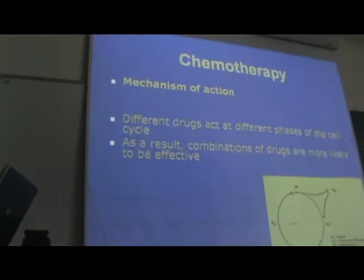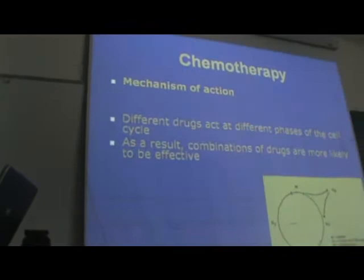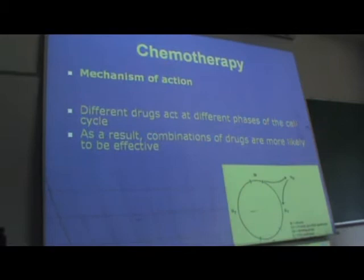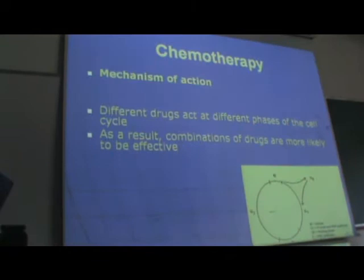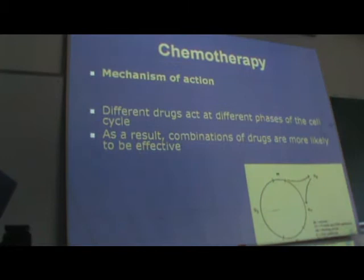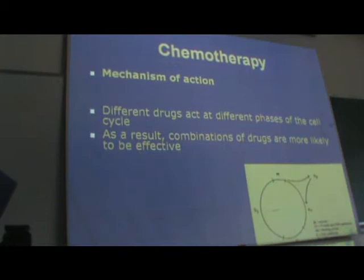The mechanism of action is quite complicated, but we will briefly cover some key facts. Chemotherapy agents work differently in different phases of the cell cycle. Most chemotherapy drugs work in specific phases, so when we use more than one chemotherapeutic agent — one working in one phase and another working in a different phase — we will likely gain a greater positive effect.